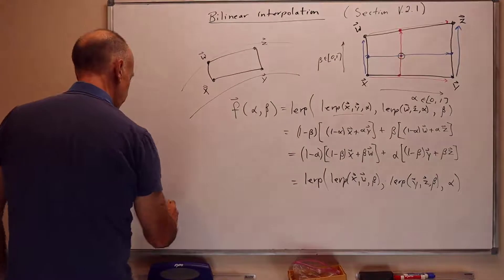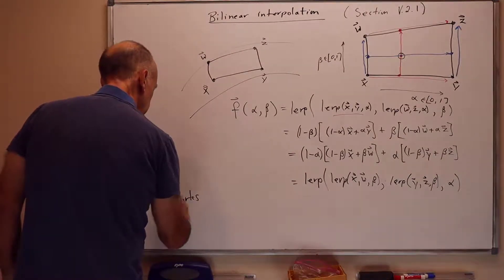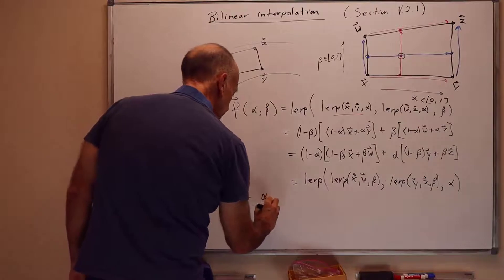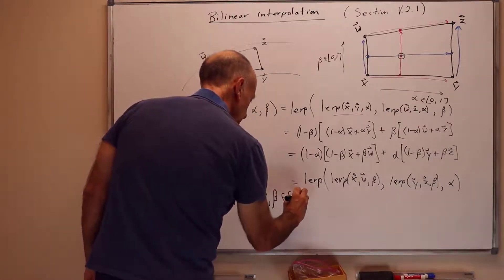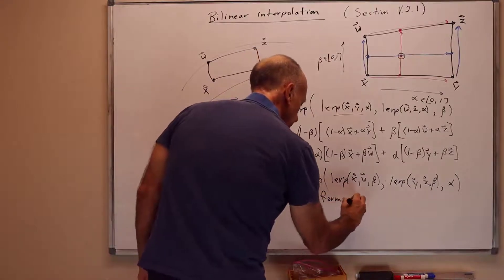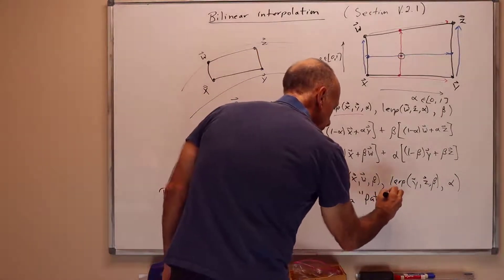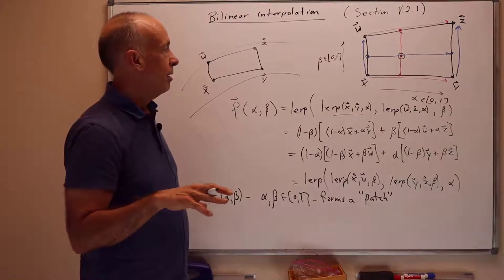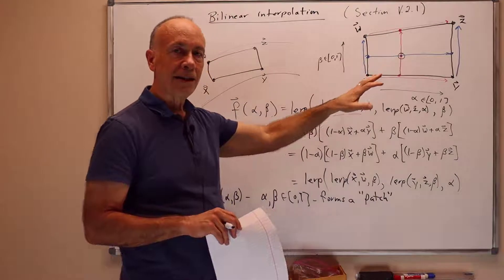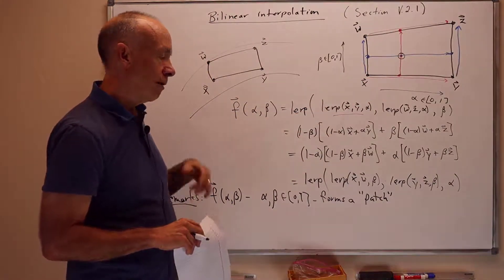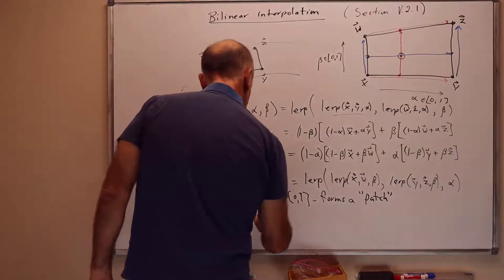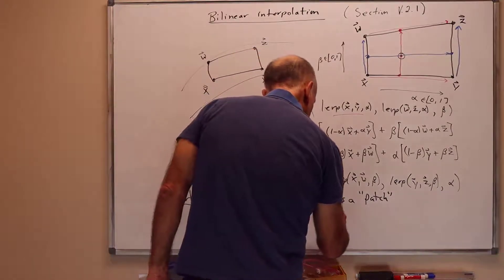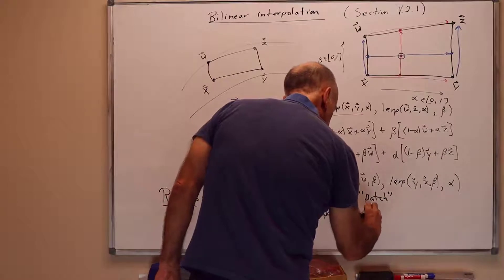A few remarks here is, first of all, the set of points f of alpha beta, with alpha and beta in the intervals 0, 1, both between 0, 1, it forms a patch. So a patch means a roughly rectangular surface, not necessarily a rectangle. It may not even be flat or planar. In particular, the points x, y, w, and z may not lie in a plane. So this is not planar. But it forms a roughly rectangular shape that's called a patch. And the boundaries of the patch are straight lines. They're line segments.